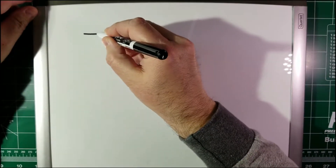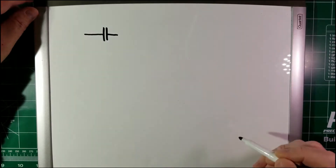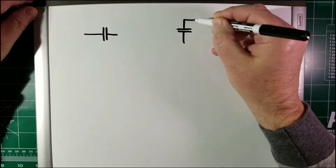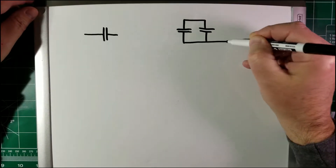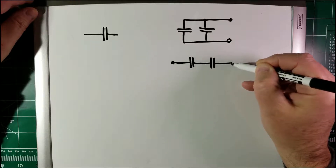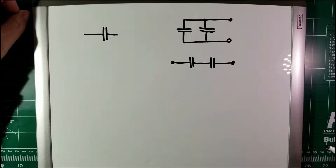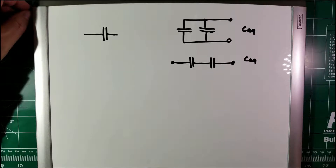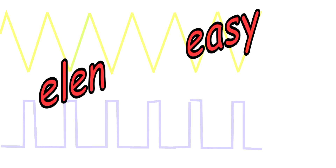Hi there, today we will talk about capacitors and in particular we will see how capacitors behave when connected in parallel or in series. We will write down some easy formulas to calculate the equivalent capacity of these configurations and then we will measure the exact value of these capacitors in the lab to verify that the equations that we wrote are correct. I am Carlo Carvano and this is Electronics Engineering Made Easy.